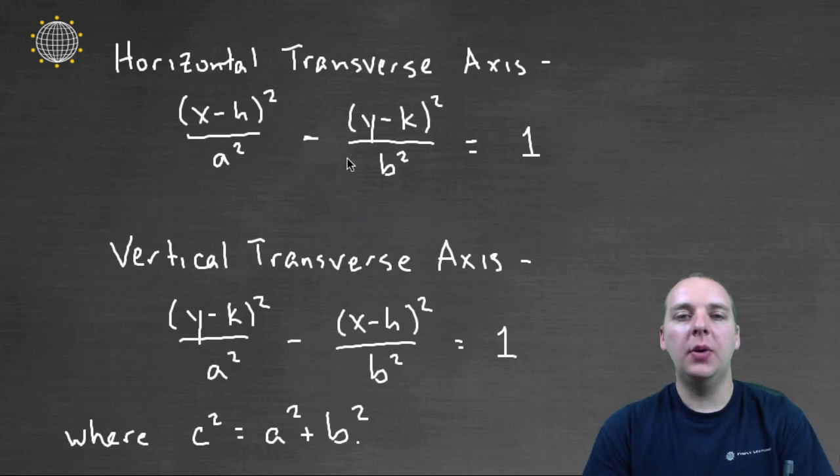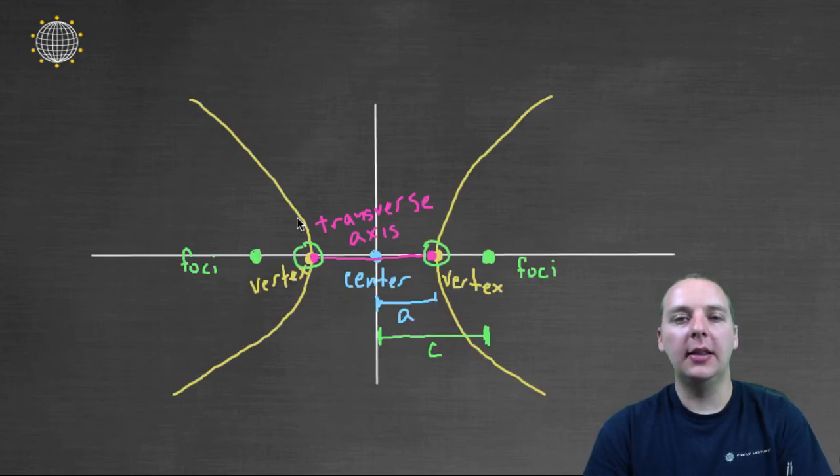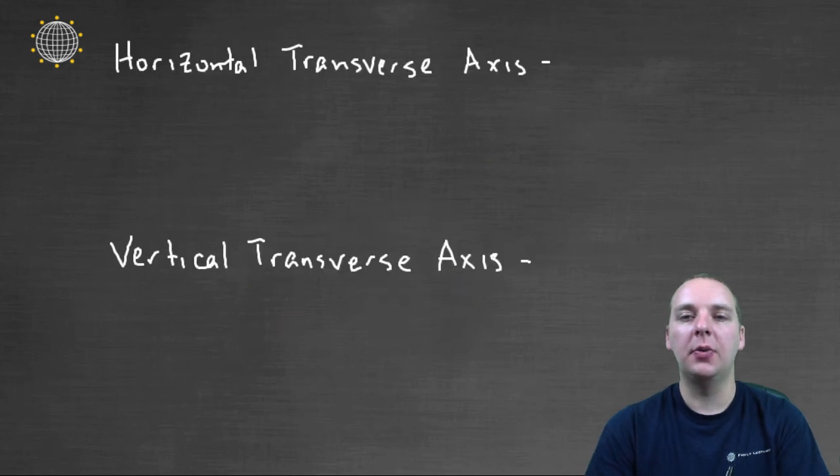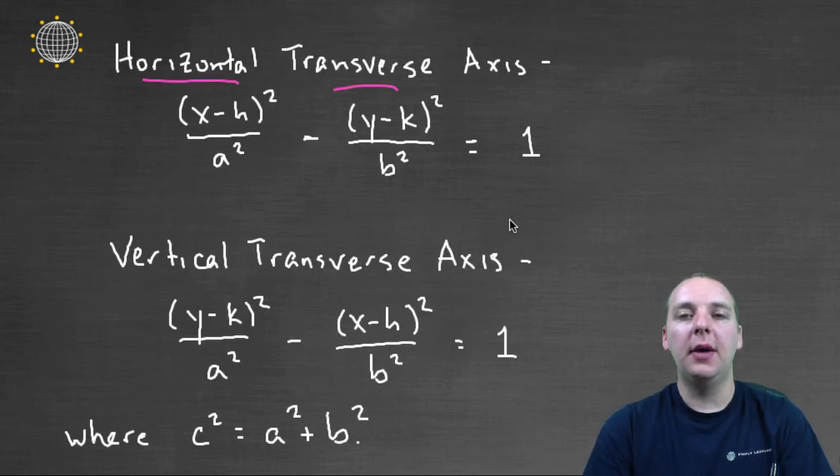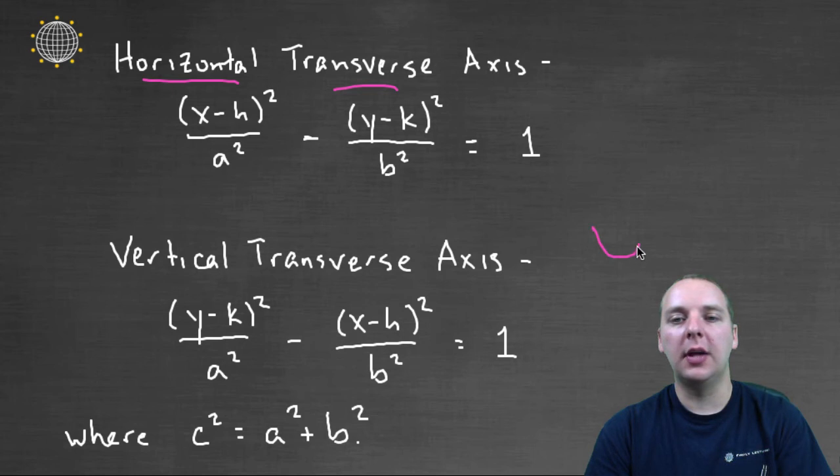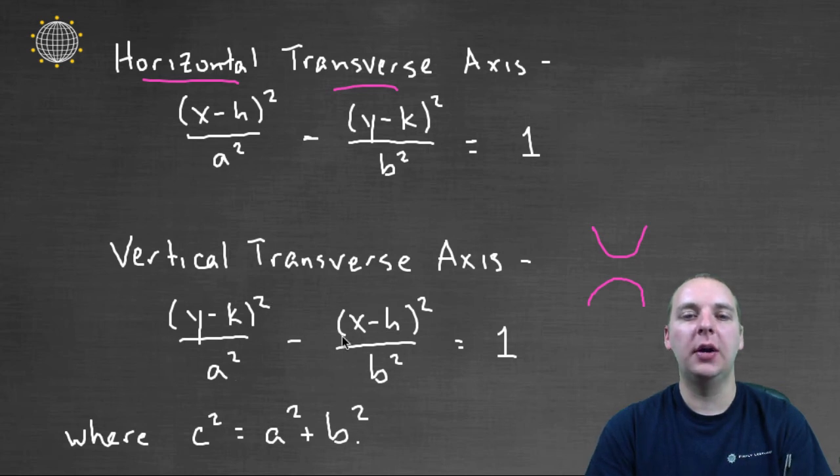Now that equation at the top is if you have a horizontal transverse axis which would be like this picture here. So this type of equation would be the top equation that we have here. If you have a vertical transverse axis where the hyperbola looks more like this, then your equation is similar but it's Y minus K squared over A squared minus X minus H squared over B squared equals one.